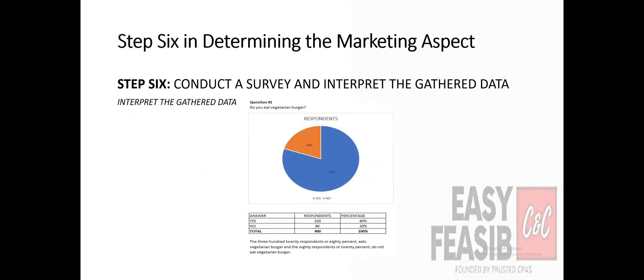We need to make an interpretation of data gathered from the respondents. The first column is for the options yes or no. The second column is for the number of respondents who chose each option. The third column is the percentage of respondents who chose yes or no. Create also a pie chart so it is more informative and easily understood by readers. Then put a statement on the lower part interpreting the data gathered. For example, the interpretation would be: 320 respondents or 80% eat vegetarian burger, and 80 respondents or 20% do not eat vegetarian burger. Do this for all questions including the demographics, and make sure to interpret the demographics first before the second set of questions.